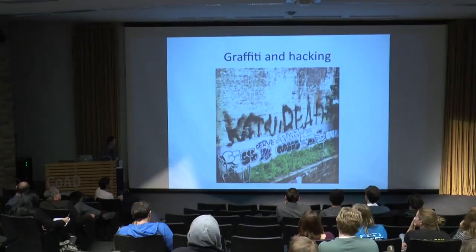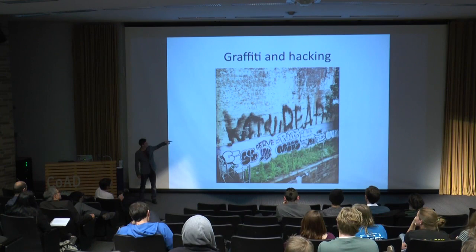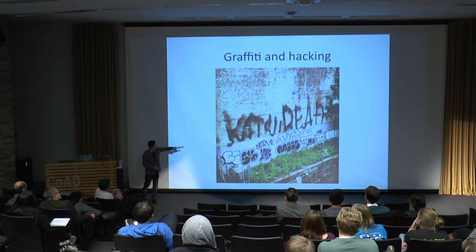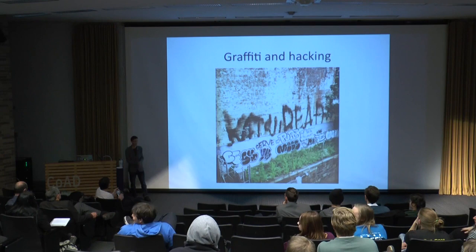A more recent example: Katsu and Reader. Their pieces in black are half-buffed, but if I tell you that's Katsu and that's Reader, you can identify them. How did they do that? A fire extinguisher filled half with water, half with paint. Fire extinguisher graffiti is one of the best innovations in graffiti in the last decade or two. Why did they do that? Because you can't ride on trains anymore in New York — it will be buffed immediately.